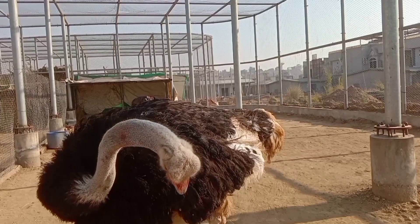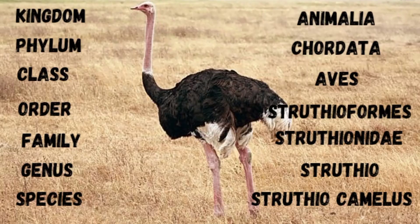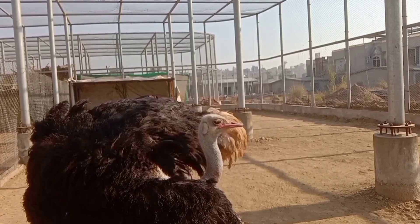Taxonomic classification of ostrich: Kingdom Animalia, Phylum Chordata, Class Aves, Order Struthioniformes, Family Struthionidae, Genus Struthio, Species Struthio camelus.